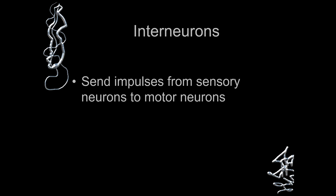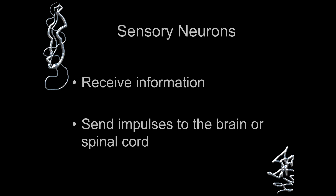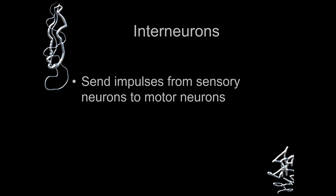Then we come to the interneuron. Interneurons send impulses from the sensory neuron to the motor neuron. We can call them the intercommunicator or the translator, which takes the impulse from the sensory neuron and sends it to the motor neuron.